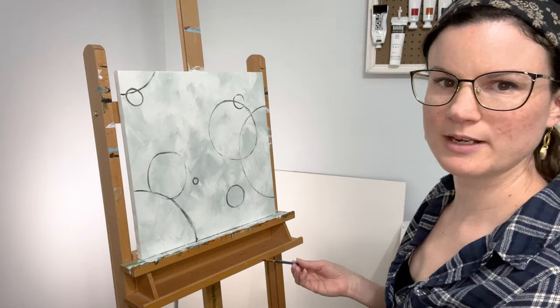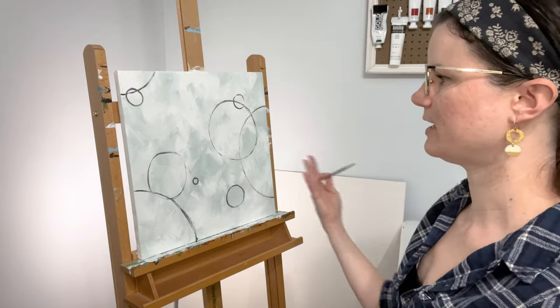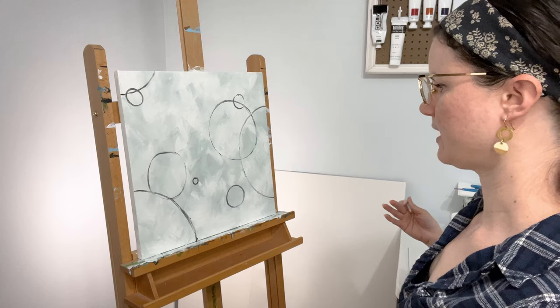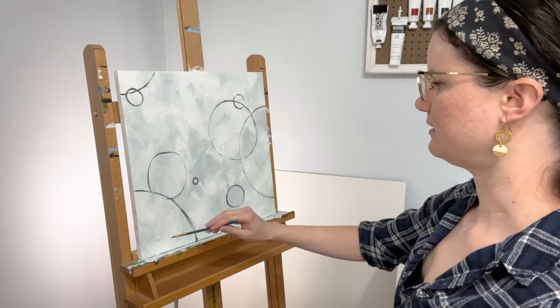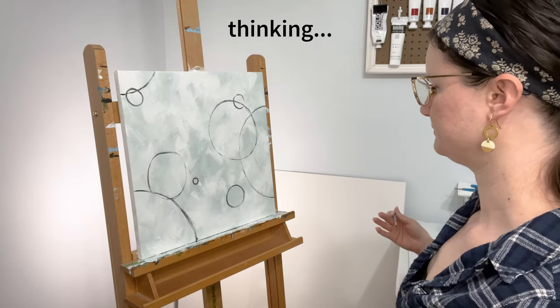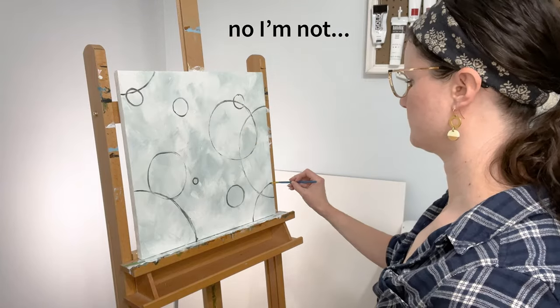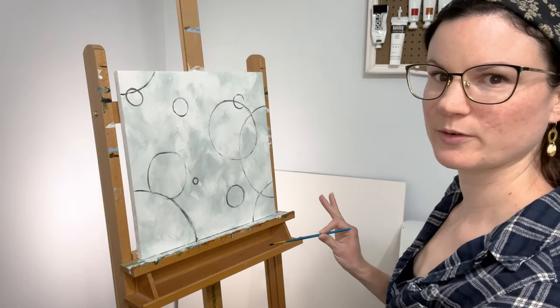It reminds me a little bit of lens flares coming through a camera lens. Like the light source is up here and the lens flares going this way. So I'm wondering if I should add an even bigger circle. I think I'm just going to leave it. I think this is a good stopping point for the circles.